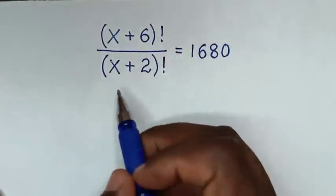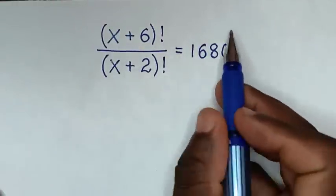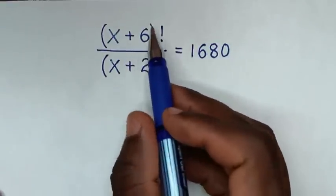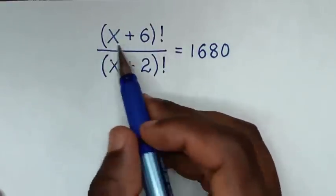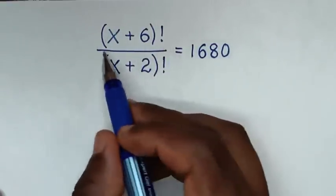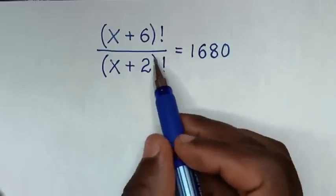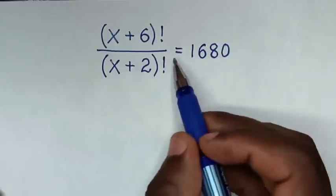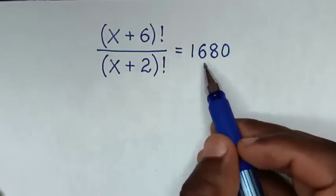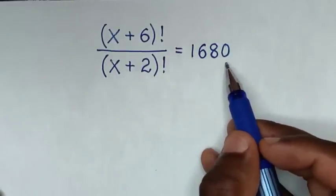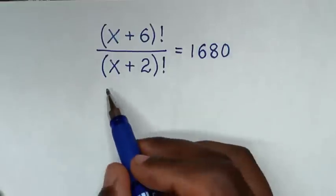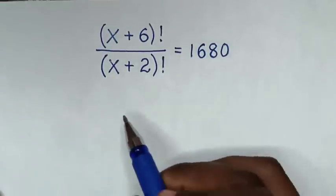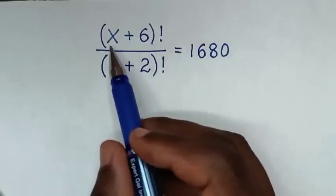Welcome. We are going to solve this math problem: (x+6)! / (x+2)! = 1680, to find the value of x from this equation. In the numerator, we have (x+6)! which we will make divisible by the denominator (x+2)!.